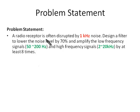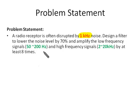A radio receptor is often disrupted by 1 kHz noise. Here we want to design a filter to lower the noise level by at least 70% and amplify the low frequency signals and high frequency signals by at least 8 times.